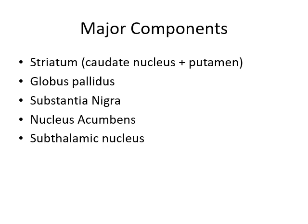The major components of the basal ganglia are: the striatum, which consists of the caudate nucleus and the putamen; the globus pallidus; the substantia nigra, which also extends into the midbrain; the nucleus accumbens; and the subthalamic nucleus, which is just below the thalamus, in contrast to the rest which are lateral to the thalamus.